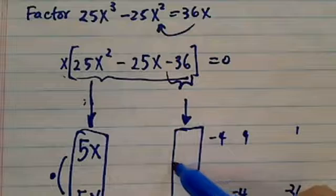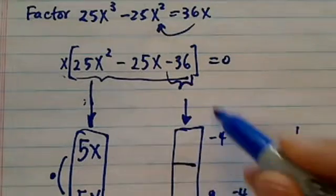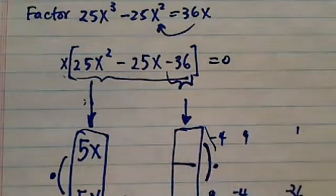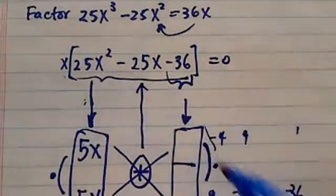So the trick is to figure out what block goes in here such that when they multiply you have minus 36 up and down. When you multiply you have minus 36, and when you go across like this and add it together what you want is minus 25.